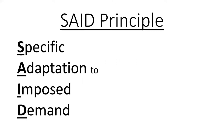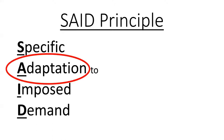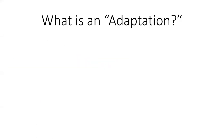Our first major principle for this course is the SAID principle. The SAID principle states that specific adaptation to imposed demand — meaning the adaptation is specific to what we do. But first we have to talk about the key word in this entire section: adaptation. What is an adaptation? What's happening? Let's clarify that first.